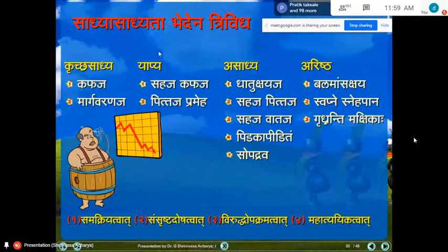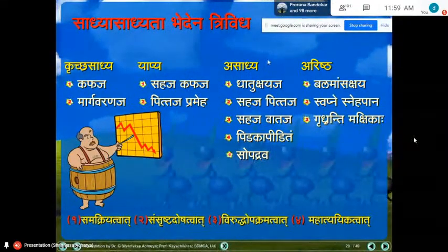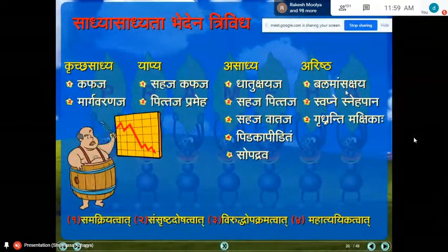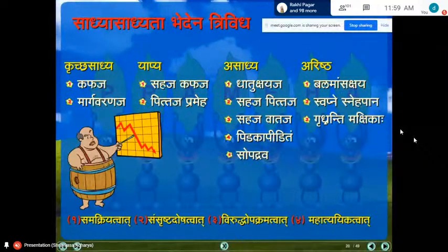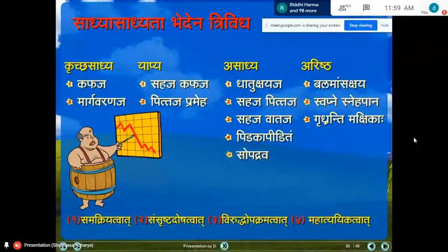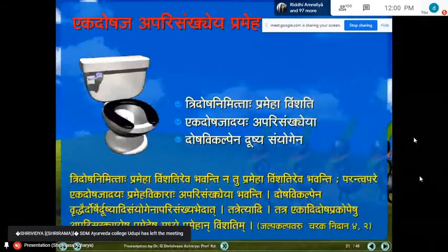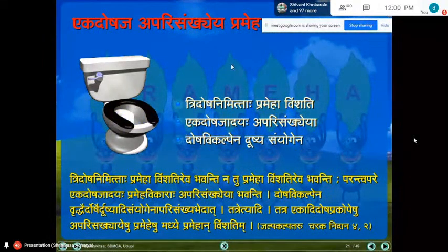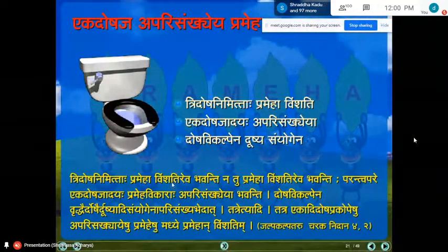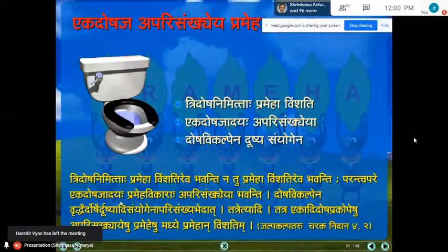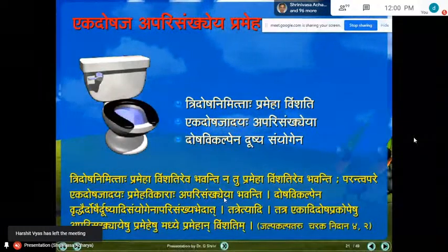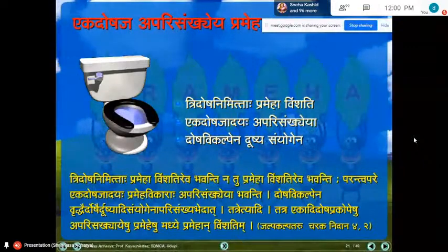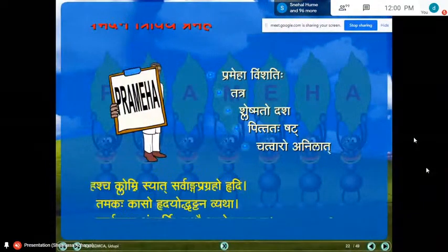Kaphaja is krischosadhyaya; margavrna is yapya; sahaja kaphaja and pittaja prameha are asadhyaya. When pidaka and shotha are present, it is considered asadhyaya. Arishtha features include bala and mamsakshaya — if the person is continuously losing bala and mamsa, that is asadhyaya. Sadhya-sadhyata is also based on samakriya: yeka dosha prameha (one dosha involved) is considered easily treatable; tridosha prameha (all three doshas involved) is difficult to treat.